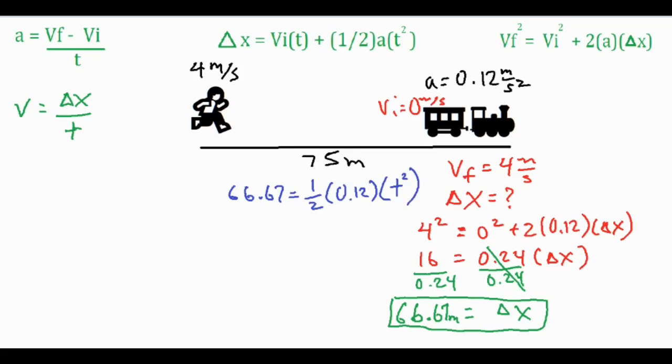From there we can multiply both sides by two, which would cancel out that one half, and then divide both sides by 0.12 to cancel this out. Then from there we can go ahead and finish off by square rooting that t squared to just make it t, and once we square root that we have a time of 33.33 seconds.